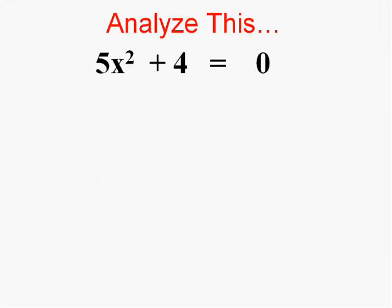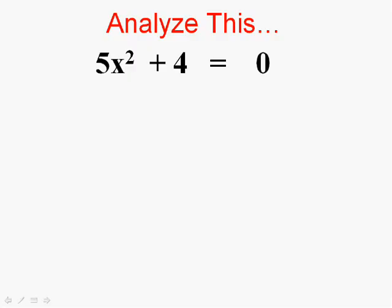Excuse me, Professor Brainiac. Okay, well let's try this. Let's analyze this. Don't do the whole problem. Just analyze it using the discriminant. Still have to start off the same way. A is 5. B... Where's B? B is 0 in this case. And C is 4. So we don't have to do the whole thing.